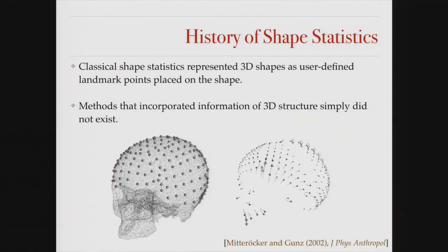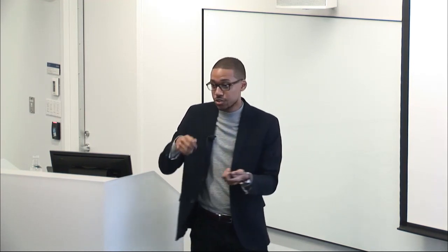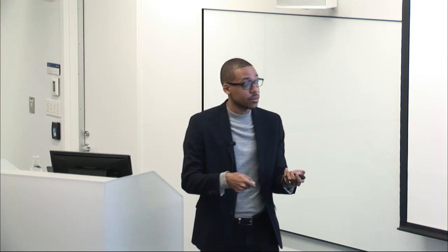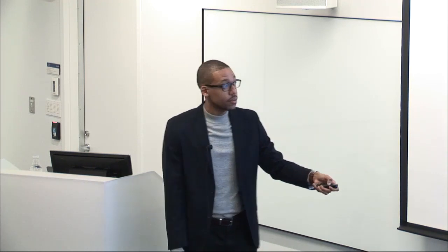The history of shapes is quite interesting. Classical shape statistics represented 3D objects as landmarks. What you would do is take some complex objects, put these landmarks — often expert-derived — onto the shape, and the landmarks would be almost like a lower-dimensional representation of what that shape would look like. Over time in biological morphometrics, we've created methods that generate semi-automatically defined landmarks. This is a tooth — teeth from primates. This is a plant eater; this is a bug eater. To compare the difference in morphology of these two shapes, you place these landmarks and have a distance function between the XYZ coordinates. You can define something like Procrustes distance and model how similar these shapes might be.